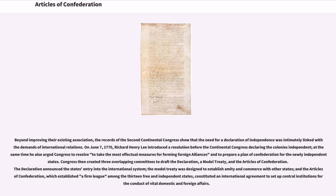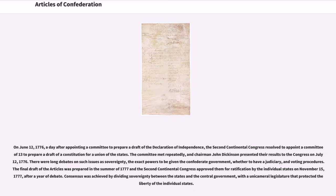The Articles of Confederation constituted an international agreement to set up central institutions for the conduct of vital domestic and foreign affairs. On June 12, 1776, a day after appointing a committee to prepare a draft of the Declaration of Independence, the Second Continental Congress resolved to appoint a committee of thirteen to prepare a draft of a constitution for a union of the states. Chairman John Dickinson presented their results to the Congress on July 12, 1776. There were long debates on sovereignty, the exact powers to be given the Confederate government, whether to have a judiciary, and voting procedures. The final draft was approved on November 15, 1777, after a year of debate.